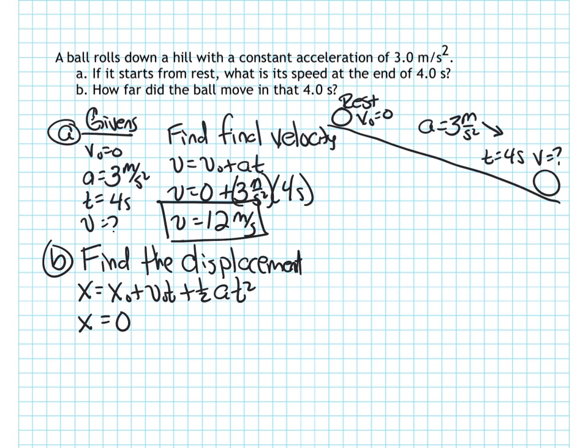x equals x₀ plus v₀t plus 1 half at squared. x equals, well, x₀ for us right now is always 0. Initial velocity is 0 too. So 0 times t, that's just 0. So x equals 1 half the acceleration, which is 3 meters per second squared, times the time 4 seconds squared.